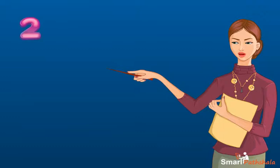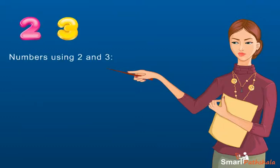Consider the digits 2 and 3. Using these digits, we want to make all possible numbers.